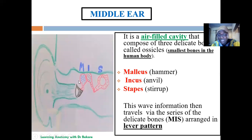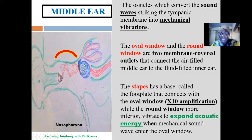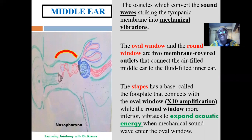Through this lever arrangement, wave information travels via the series of delicate bones. The form of sound wave coming from the outer ear is transformed into mechanical vibration through this lever formation. The mechanical waves are then transferred into the inner ear. The middle ear and inner ear are separated by two windows: the oval window on top and the round window below. The stapes rests on the oval window, where there is further amplification — about tenfold. The round window vibrates to expand the mechanical energies and further support amplification generated at the oval window.